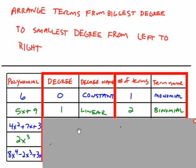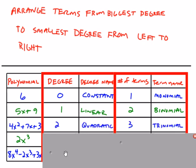The third example, our biggest exponent is a 2. We have three terms. So that is a quadratic trinomial. Those are the ones that we factor the most frequently.